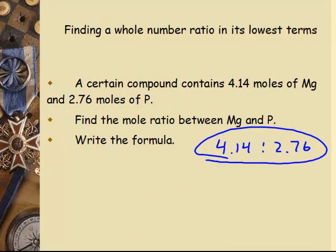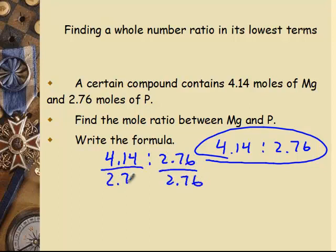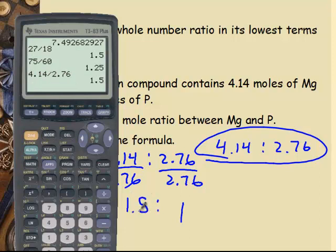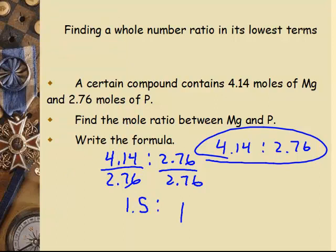So now this crazy one before, when we looked at it, we couldn't do it because we didn't know in our head the multiple. But now we have 4.14 to 2.76. We're going to divide them both by 2.76. So 2.76 divided by 2.76 is 1. 4.14 divided by 2.76 is 1.5.